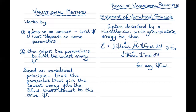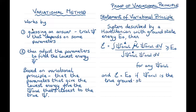Whatever we guess for our trial wave function, we can never get an energy that's lower than the ground state energy. So we always know that the energy calculated for any trial wave function is an upper bound on the possible ground state energy. Furthermore, if the calculated expectation value equals the ground state energy, then the trial wave function is the true ground state wave function. And as we adjust our trial wave function so that the energy gets lower and lower, the trial wave function gets closer to the true ground state wave function.